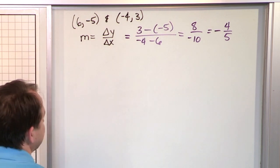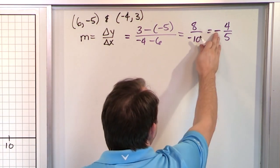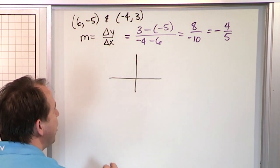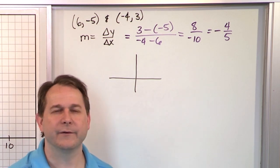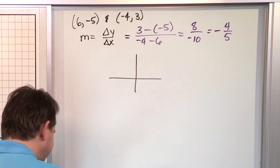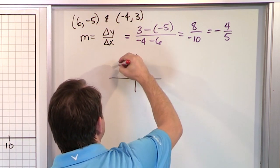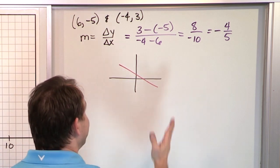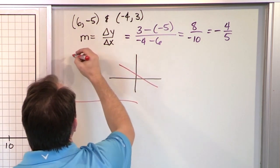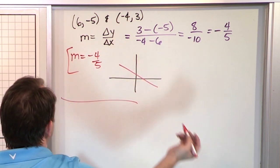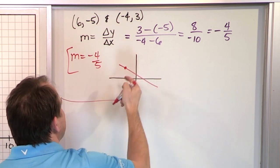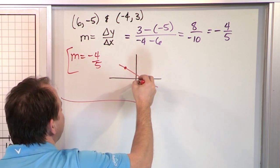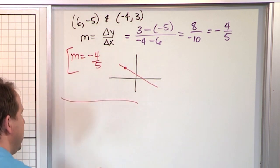I won't plot it, but what does this line generally look like? It has a negative slope, so it doesn't slant upward — it goes the other way. The magnitude is just a little less than 1, so it's a fairly shallow line. The slope is negative 4 fifths, so if I knew a point and wanted another, I'd rise down 4 units and go over 5 units.